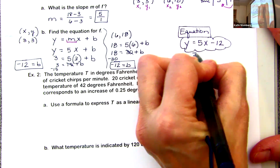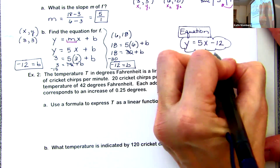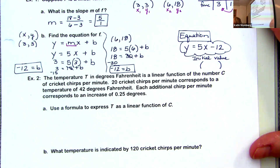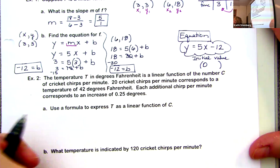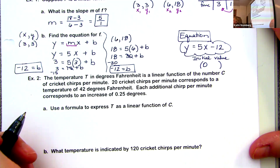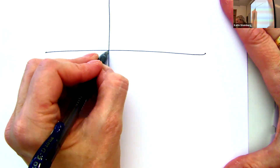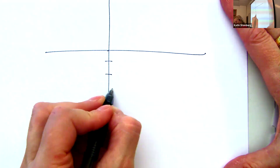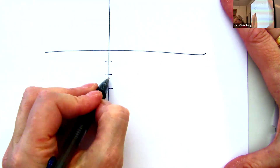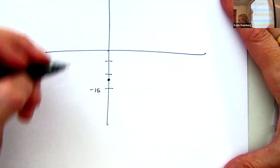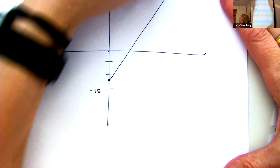The ordered pair for the initial value has variable = 0, so it would be (0, −12). On a graph, the y-intercept is at negative 12 on the y-axis. With a slope of positive 5, the line goes up from there.